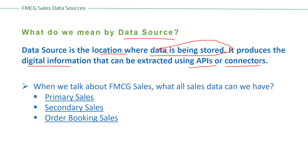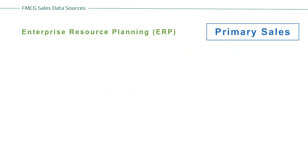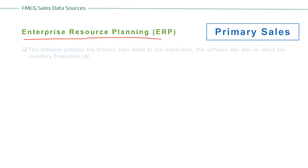When we talk about FMCG sales, the primary three types of sales data are: first, primary sales; second, secondary sales; and third, order booking sales. We also talk about tertiary sales, but that's out of the scope of this video.